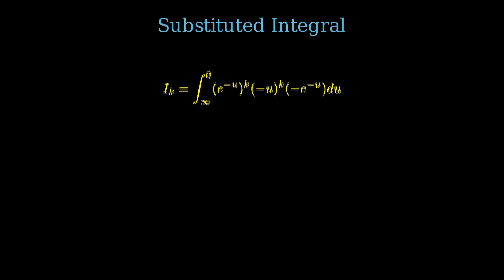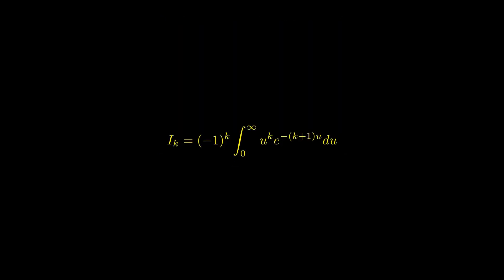Simplifying, this is the integral from infinity to 0 of e to the negative ku times negative 1 to the k times u to the k times negative 1 times e to the negative u du. Combining the exponentials, e to the negative ku times e to the negative u equals e to the negative k plus 1, u. To simplify it further into a familiar form, let v equal k plus 1 times u.